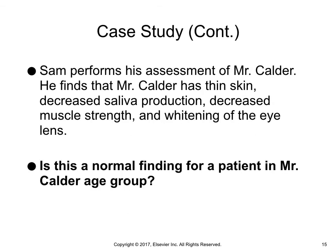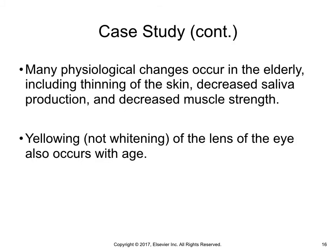Case study continued. Sam performs his assessment of Mr. Calder. He finds that Mr. Calder has thin skin, decreased saliva production, decreased muscle strength, and widening of the eyelids. Is this considered a normal finding for a patient in Mr. Calder's age group? Many physiological changes occur in the elderly, including thinning of the skin, decreased saliva production, and decreased muscle strength. However, yellowing, not widening, of the lens of the eye also occurs with age.